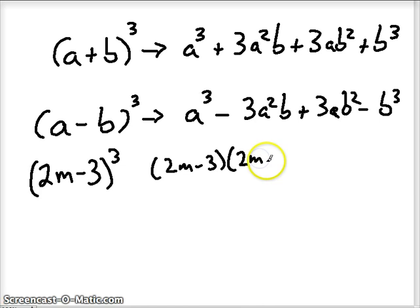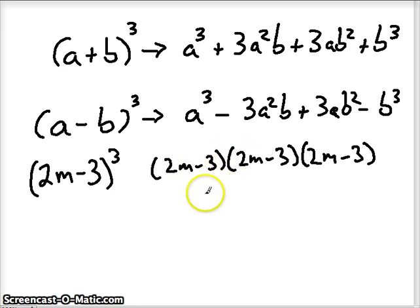So cubing it would mean multiplying the binomial by itself three times, right? So let's just focus on these first two parentheses first and do some foiling. 2m times 2m is 4m squared. 2m times negative 3 is negative 6m. We've got another one of those, and negative 3 times negative 3 is positive 9.